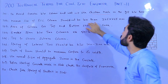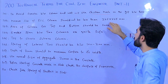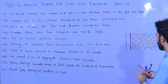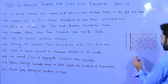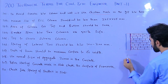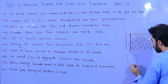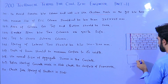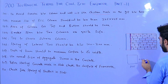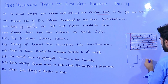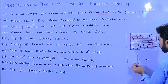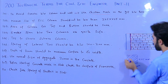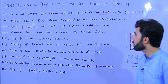Term 102: The minimum size of an RCC column should not be less than 225 by 225 millimeters. The size of the column should not be less than 225×225mm, otherwise you will face problems.